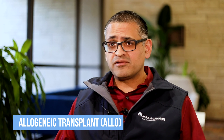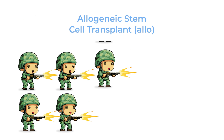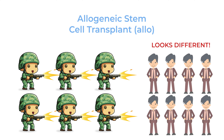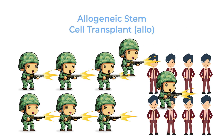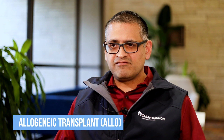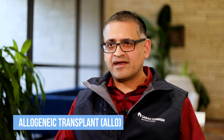However, with allogeneic transplants there are a lot more complications. When the donor cells attack the myeloma, it's because the myeloma looks different to the donor cells — but the rest of the host also looks different. Normal tissues can be attacked, and we call that graft versus host disease. That's the major complication and it can be very difficult to manage, so allotransplants are done in more selective cases in myeloma patients because of that complication.